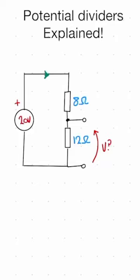I'll show you how you can solve a potential divider circuit in just a few seconds. The first step is to add the two resistances together. Here we've got 12 ohms plus 8 ohms, which equals 20 ohms.